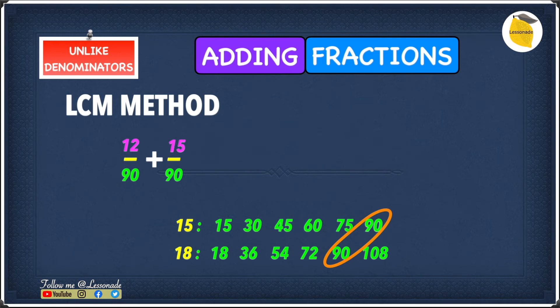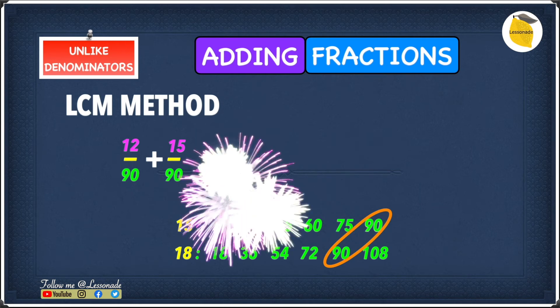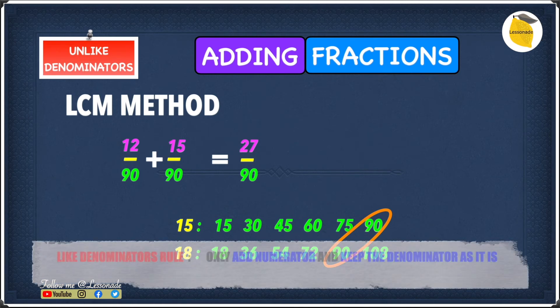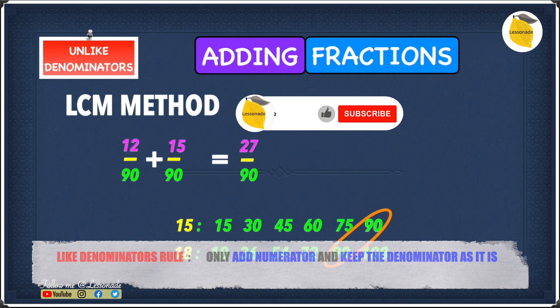Now we have 12 over 90 plus 15 over 90. We know that 12 over 90 plus 15 over 90 gives you 27 over 90. We get 27 over 90 because when you have the same denominator you only add the numerator and leave the denominator as it is.